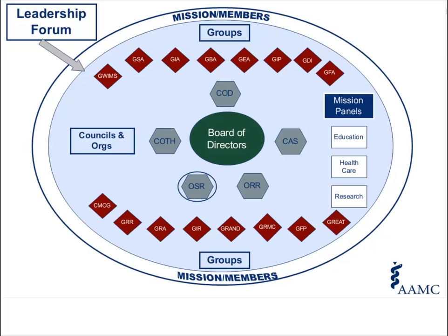This is a general overview of the structure of the AAMC, and this is a slide that I find really helpful to put it all into perspective. So the AAMC is governed by a 17-member board of directors, which includes one medical student. Beginning in November, that will be Maria Kalashnikova, who is our current Western Regional Chair. That board of directors is represented by the green circle in this diagram, and then there are councils and organizations within that structure. The OSR is one of those councils and organizations.